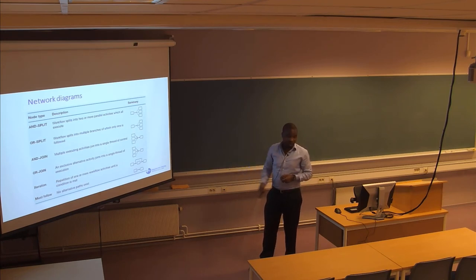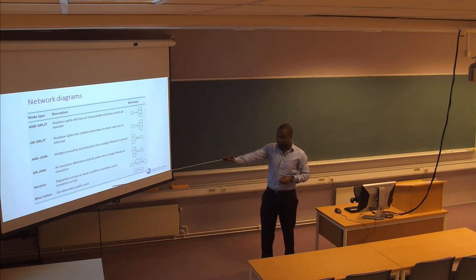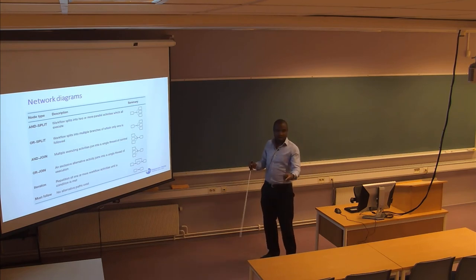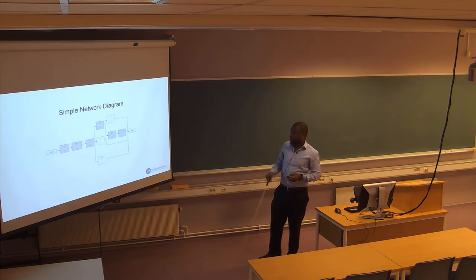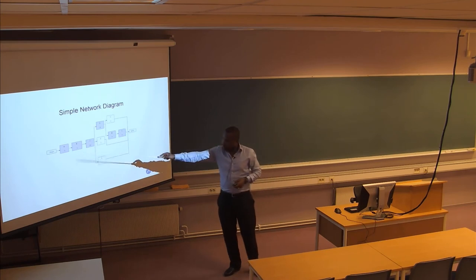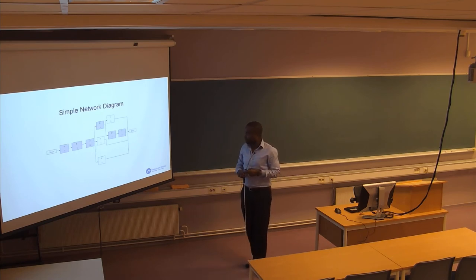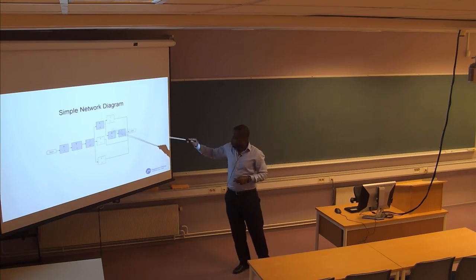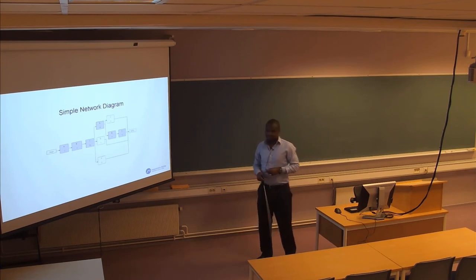The AND-join is where multiple activities all combine into one subsequent activity. The OR-join is where an exclusive alternative activity joins into a single thread of execution. An iteration means certain activities are repeated over and over until a particular goal or condition is achieved. A must-follow means one activity has to follow another. Here is an example of a network diagram where activities are performed in series and at one point split into three parallel activities.